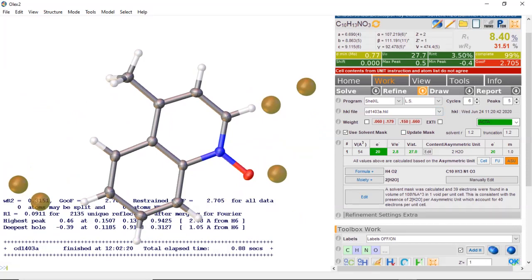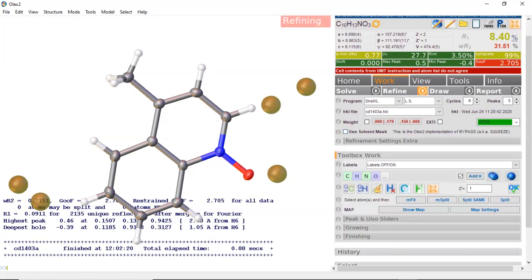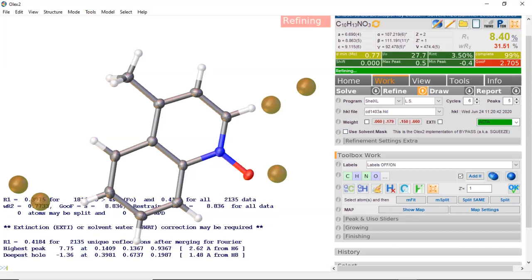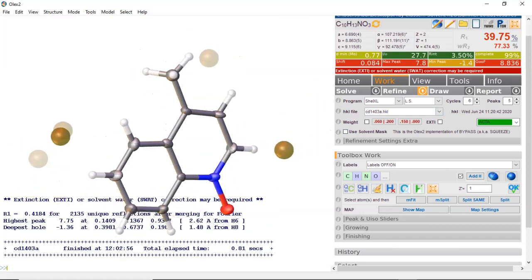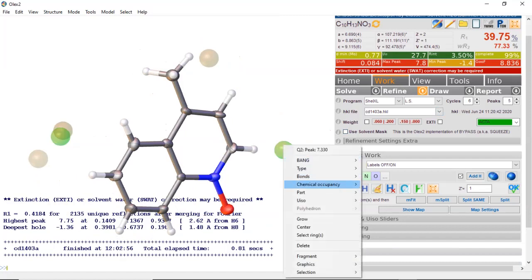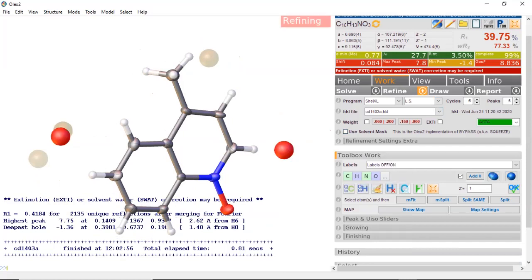If you don't want to use a solvent mask, all you do is uncheck the box and click refine again. Now it brings back those two water molecules. So we label them as oxygens and hit refine.